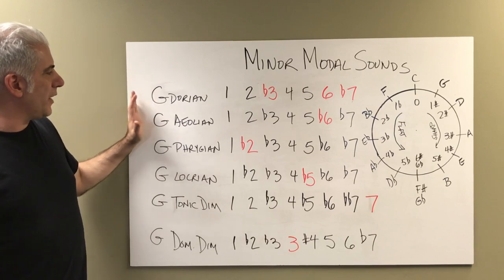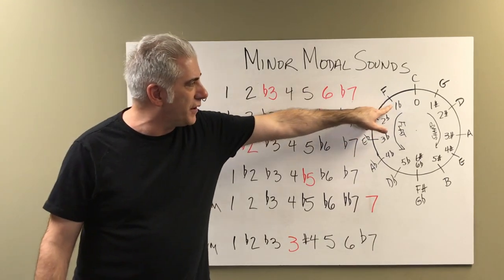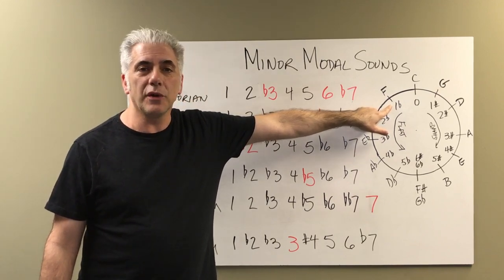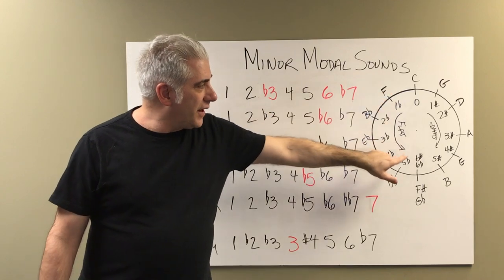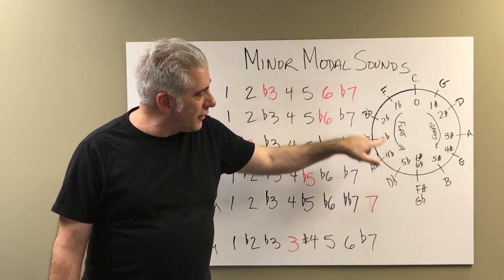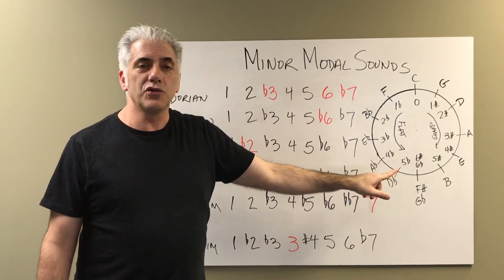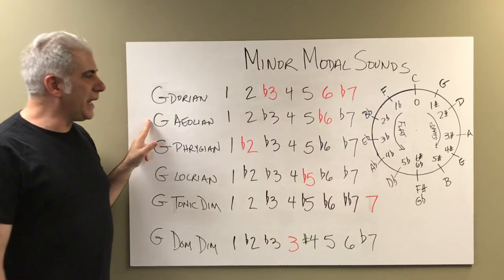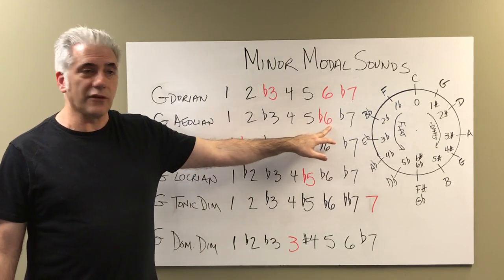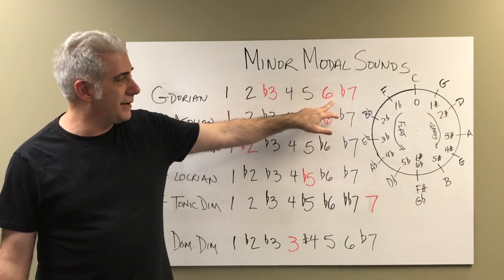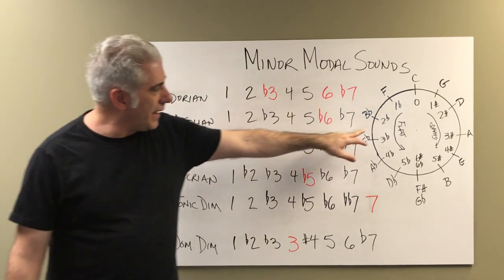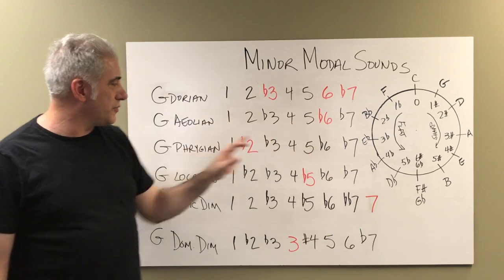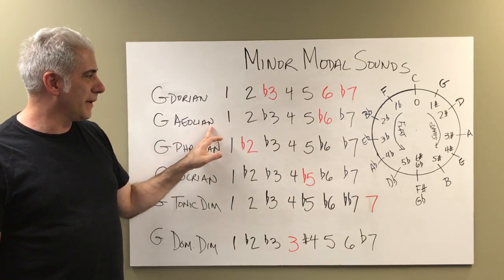To go from Dorian to Aeolian: Dorian is from the key of F, and if we go to our circle of fifths, G Dorian has one flat — so we're on the flat side of the circle of fifths. As long as we're going in a counterclockwise motion, we're going in a flat direction. G Aeolian adds the flat six, which does not occur in G Dorian. That comes from the key of B flat because that note happens to be E flat. So G Aeolian is from the key of B flat.